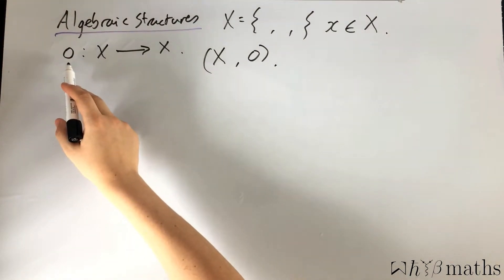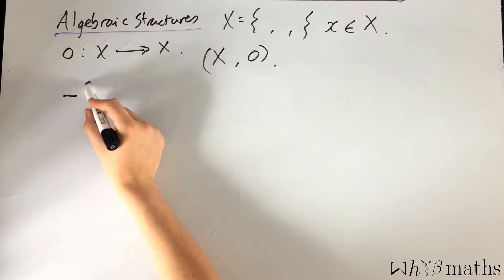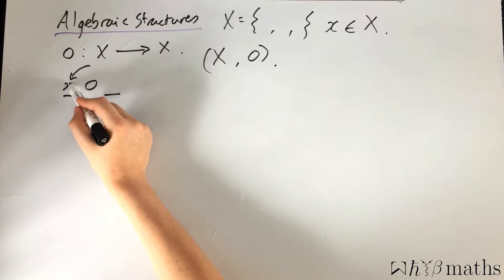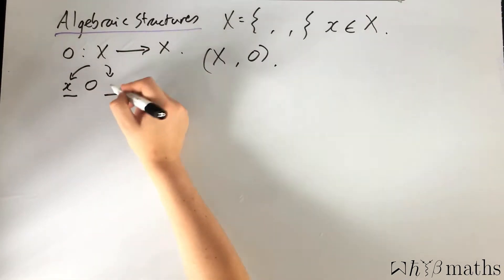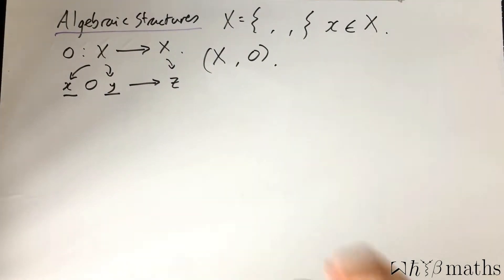What would an example of this operation be? We usually deal with what are called binary operations. A binary operation simply takes one element from X and another element from X and returns a third element. I'll make this concrete by providing you with an example.